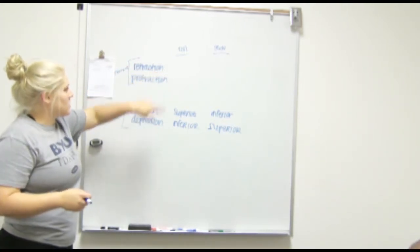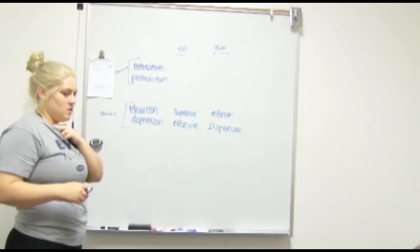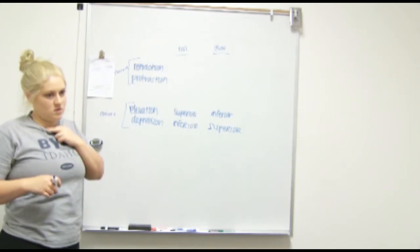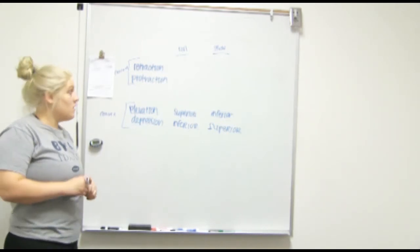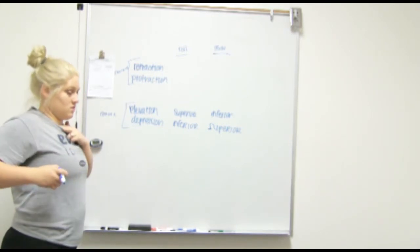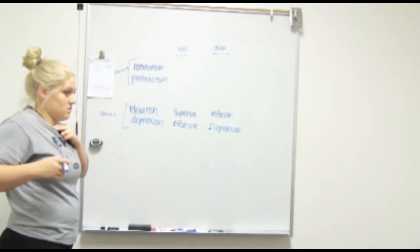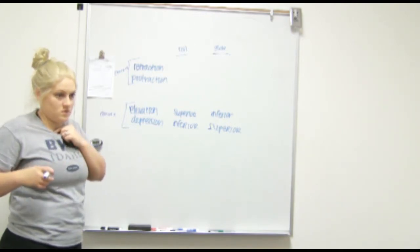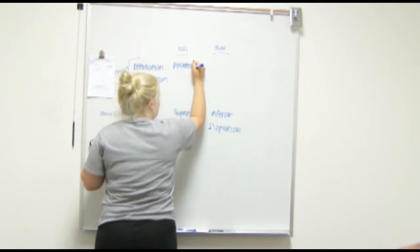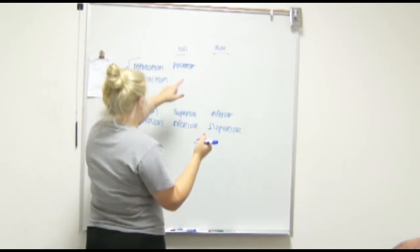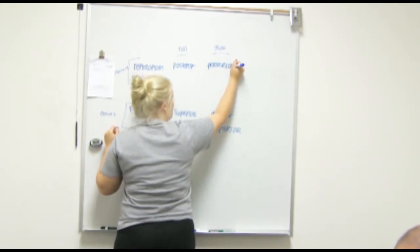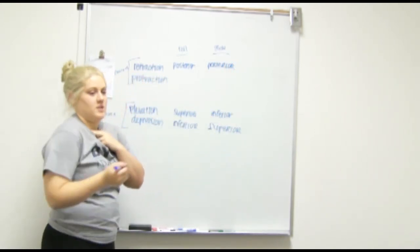So during retraction what do you think the role is? Retraction, so it's going like this. The role would go posterior, exactly. And so because it's concave convex our glide is also posterior. And then protraction is just opposite, it's going to come anterior.